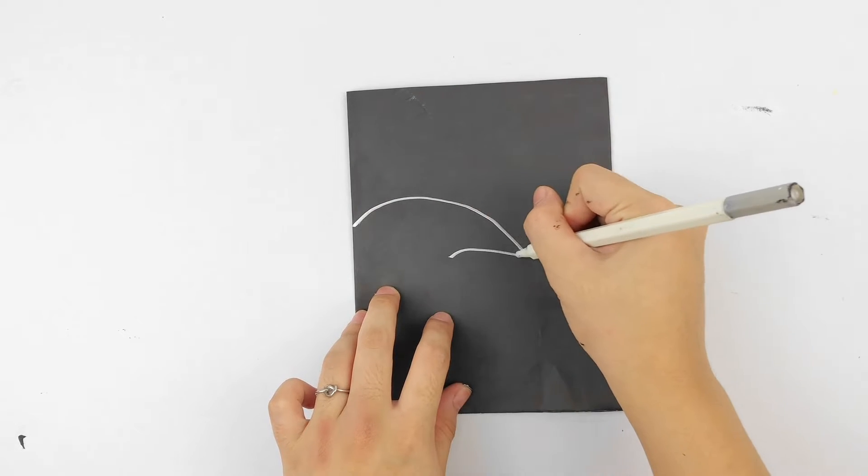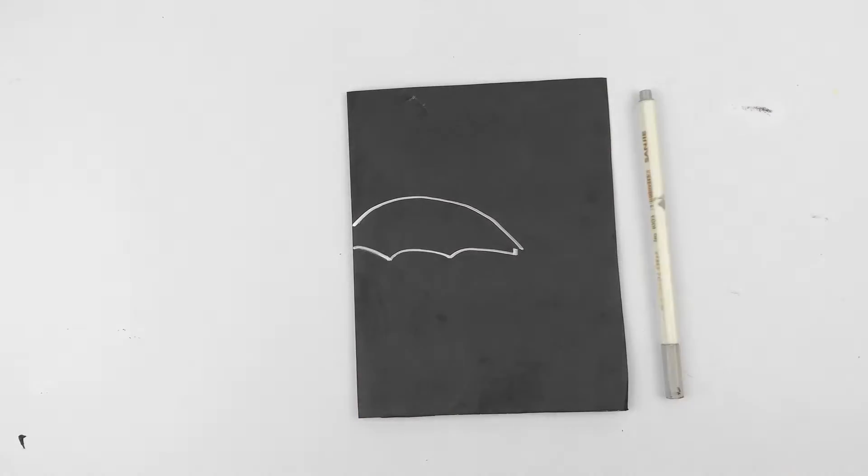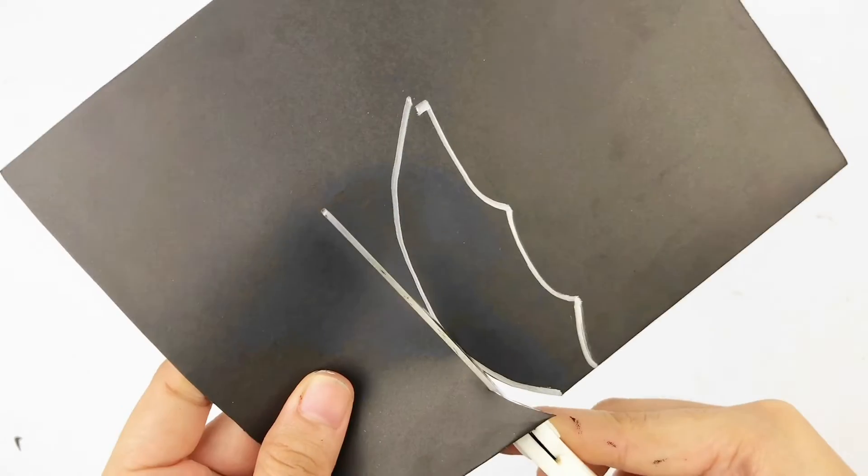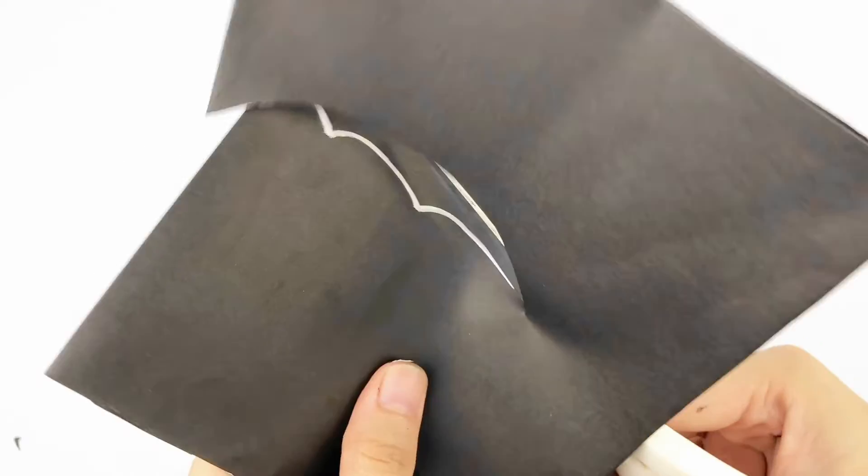And that way when I cut it out, I can easily cut out both sets of those wings and then just cut it in half. And then I will have two bat wings that I'm going to be using and gluing on that bat body.